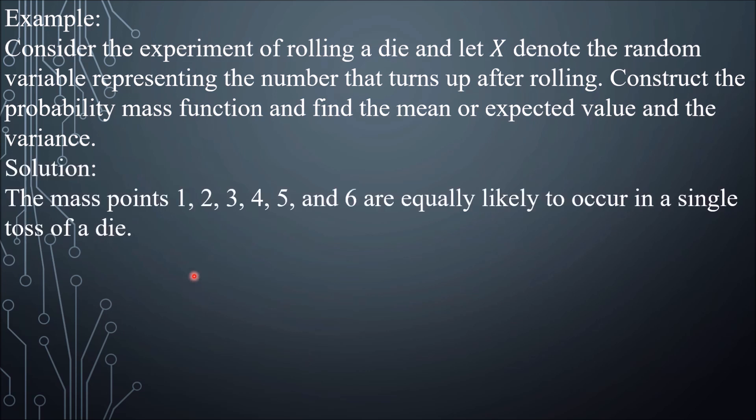Solution: The mass points 1, 2, 3, 4, 5, and 6 are equally likely to occur in a single toss of a die.